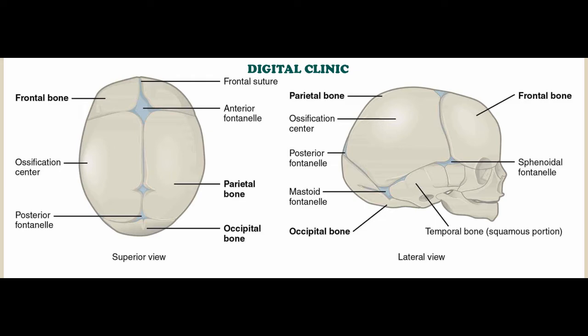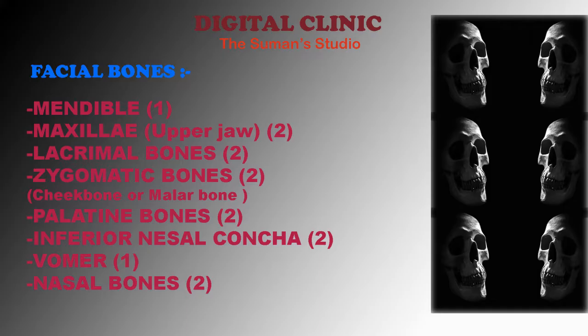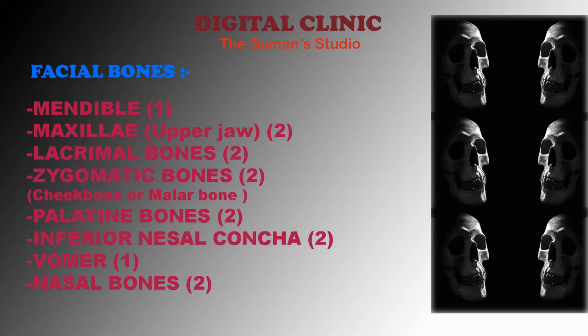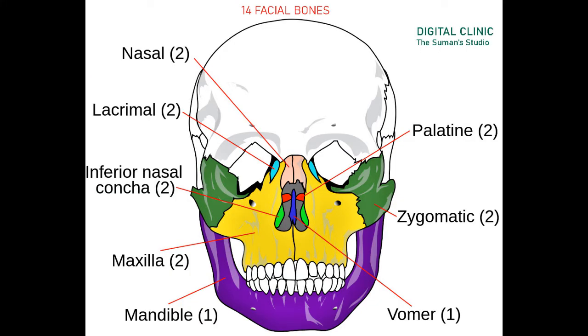The total number of facial bones in the human body is 14. These 14 facial bones are: mandible 1, maxilla 2, lacrimal bone 2, two zygomatic bones, palatine bone 2, inferior nasal conchae 2, vomer 1, and nasal bones 2.